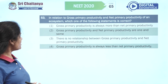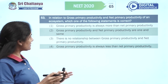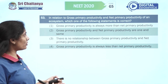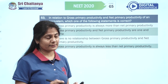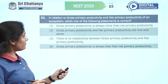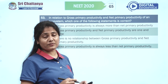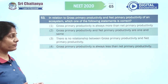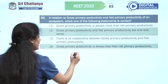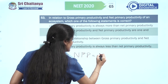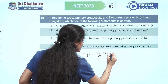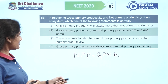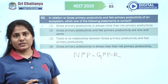In relation to gross primary productivity and net primary productivity of an ecosystem, which statement is correct? Gross primary productivity is always more than net primary productivity — that makes our job easier. Net primary productivity equals gross primary productivity minus respiratory losses. The first option is the answer.